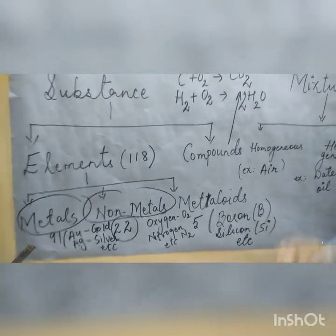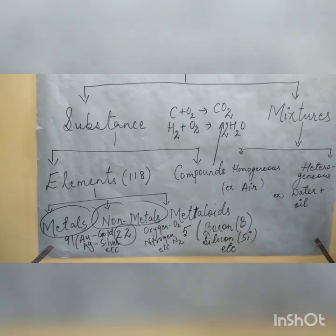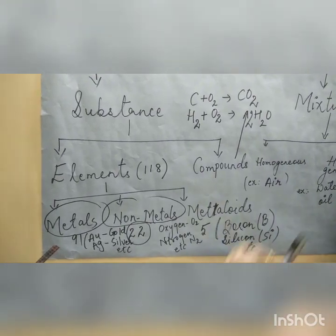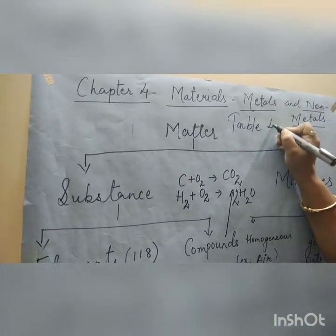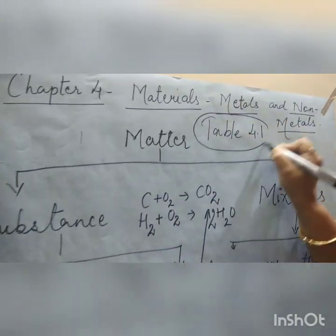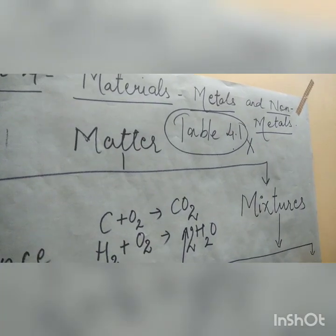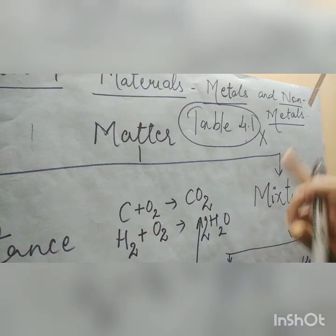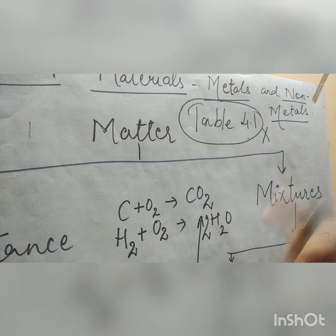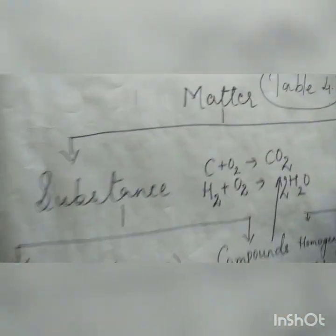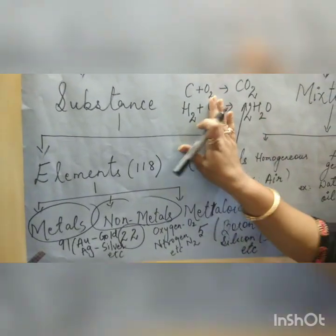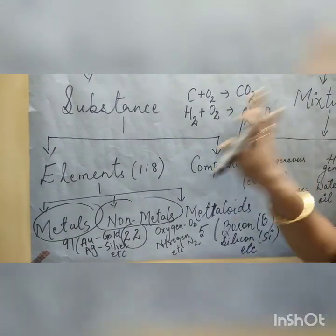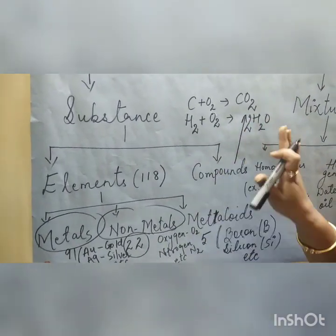Next class we will study the physical properties of metals and non-metals. On the first page, that is page number 44, there is a table 4.1. Do not fill that table unless I teach you the physical properties first. This schematic diagram you have to draw in your classwork copy - I am sending you the schematic diagram through an attachment.